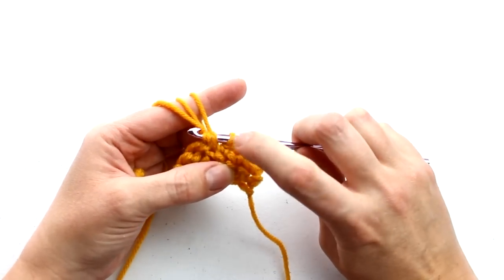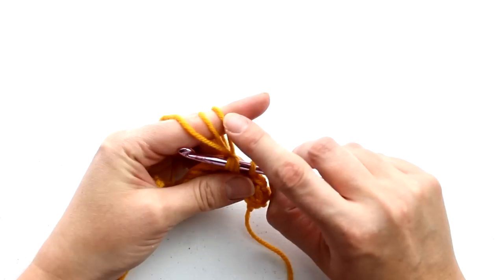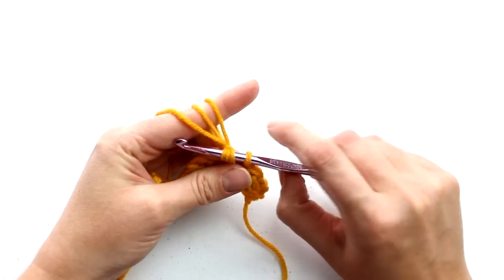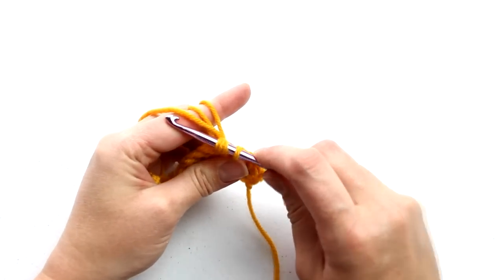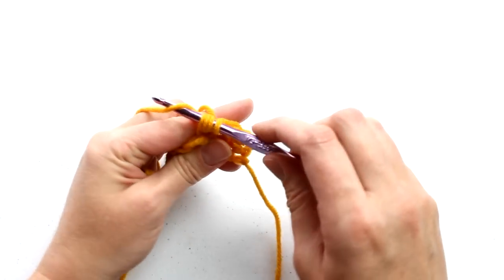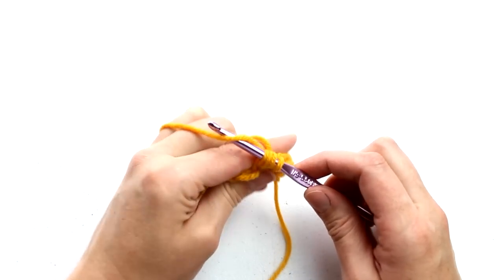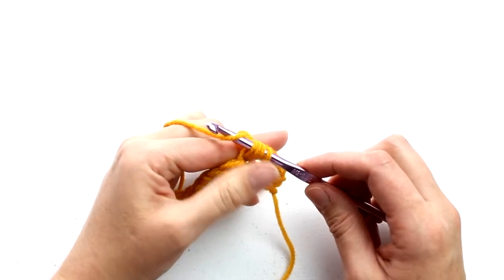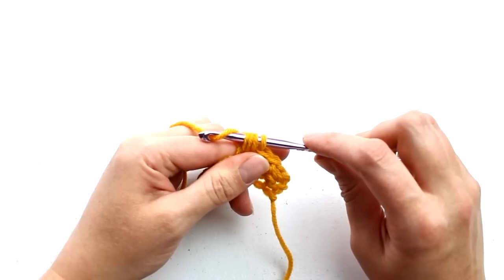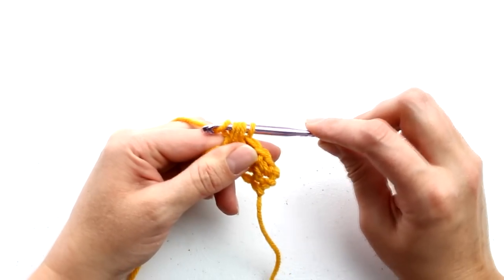There will now be four loops on your hook. Now it still looks like there are three loops on your index finger, but really there are only two loops. And then you have the working strand of yarn that's over the top of your hand. So leave the two loops on your finger, and only yarn over the working strand of yarn. Pull the yarn through all four loops on your hook.